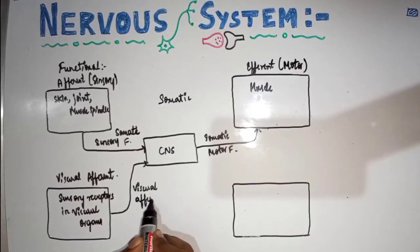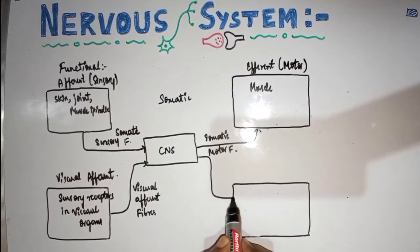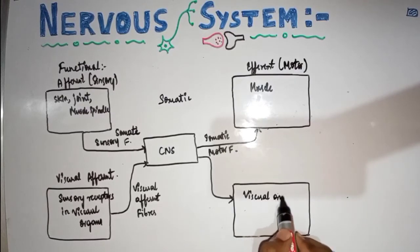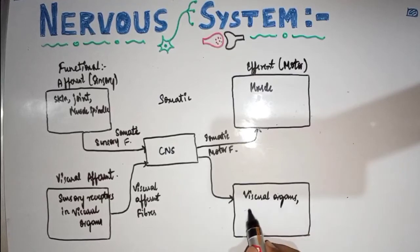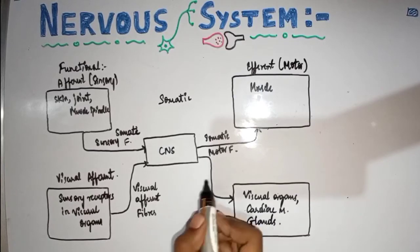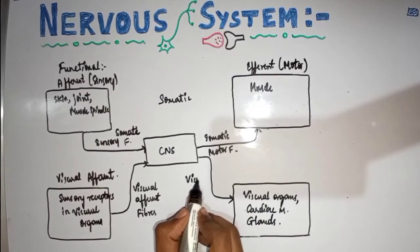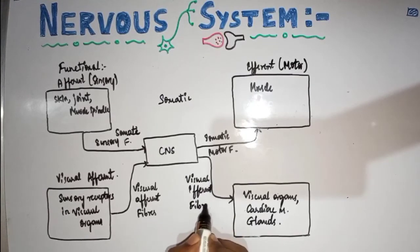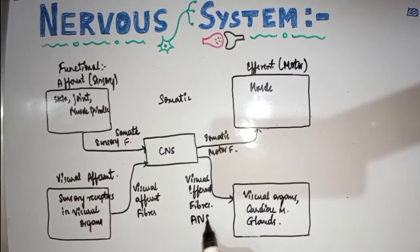Sensory stimuli travel via visceral sensory fibers to the CNS. From the CNS, impulses go back to visceral organs — including cardiac muscles, which are involuntary — and to glandular tissue, via visceral efferent fibers. Please note: visceral efferent fibers are also called the autonomic nervous system, ANS.